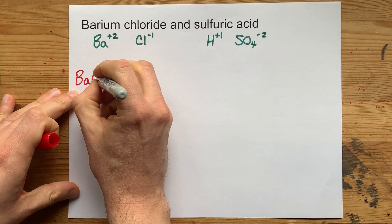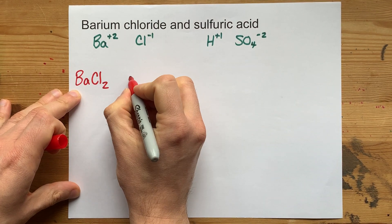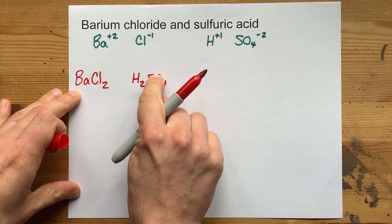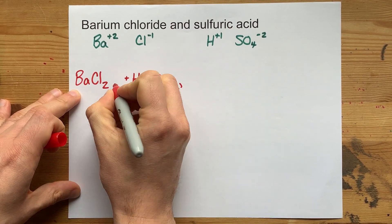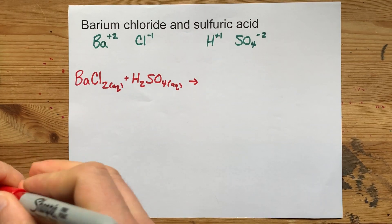Ba with Cl gives you BaCl₂. H with SO₄ gives you H₂SO₄. You probably knew that. Those are the formulas for those two compounds. Sulfuric acid dissolves in water and actually barium chloride does as well.